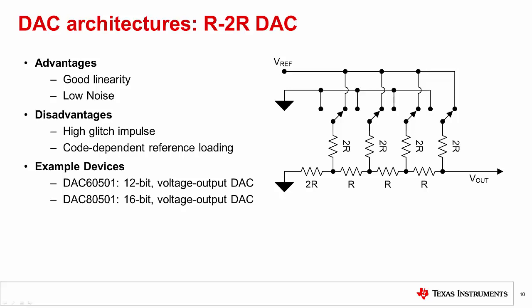A downside of this design is that between individual codes, multiple switches might be changing. This can result in a higher glitch energy than a string DAC. Another contributor to the higher glitch energy is the break-before-make switching present in an R2R DAC implemented to avoid momentarily shorting the references to ground. This instantaneous switching leads to higher glitch energy as the result of the parasitic capacitance and inductance present in the circuit.